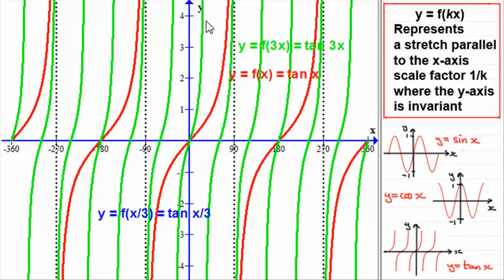The graph still goes through the origin. Where the curve crossed the x-axis at 180 degrees, we now have a third of that — 60 degrees. That part of the curve corresponds to this section bunched up closer to the y-axis. And this repetition occurs throughout the graph.